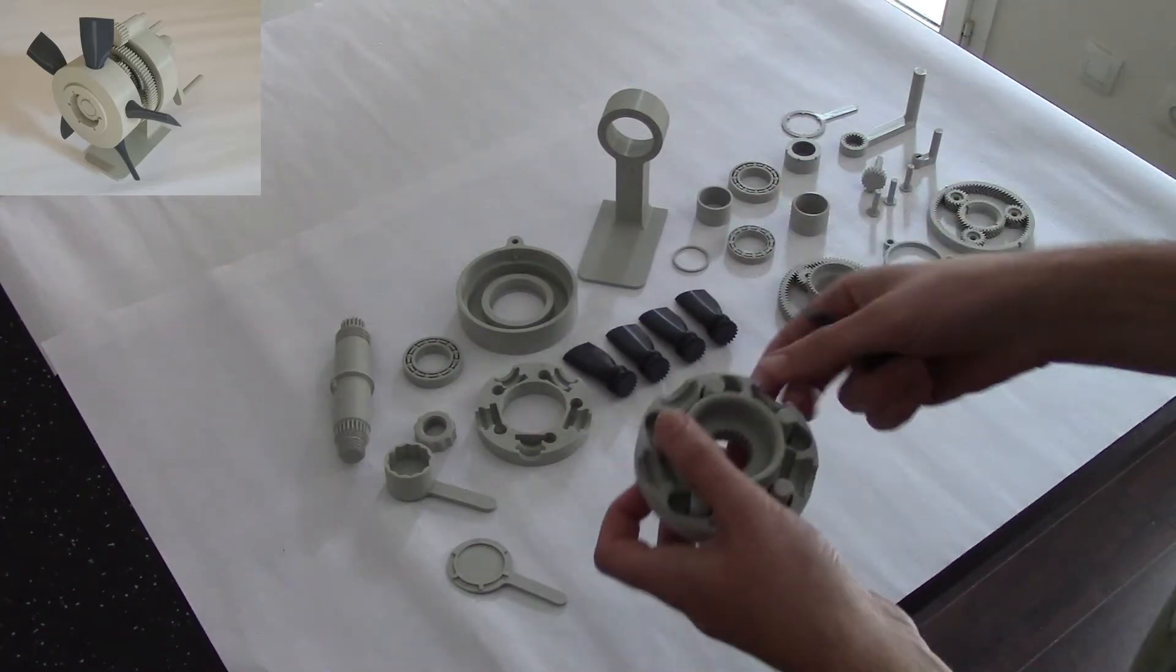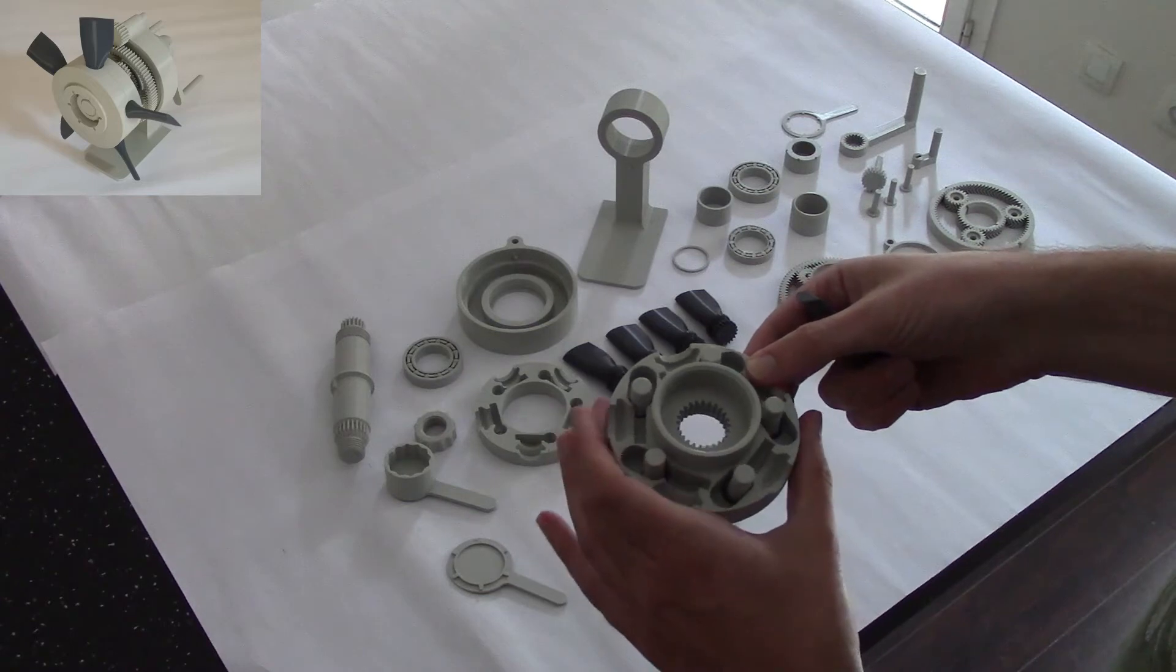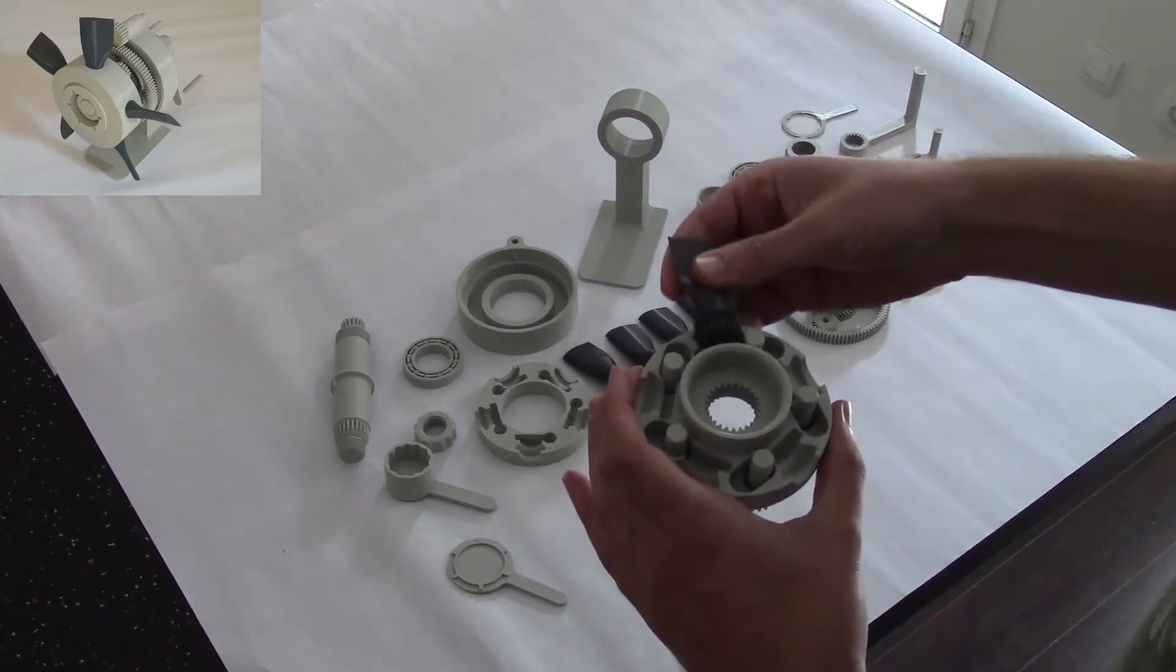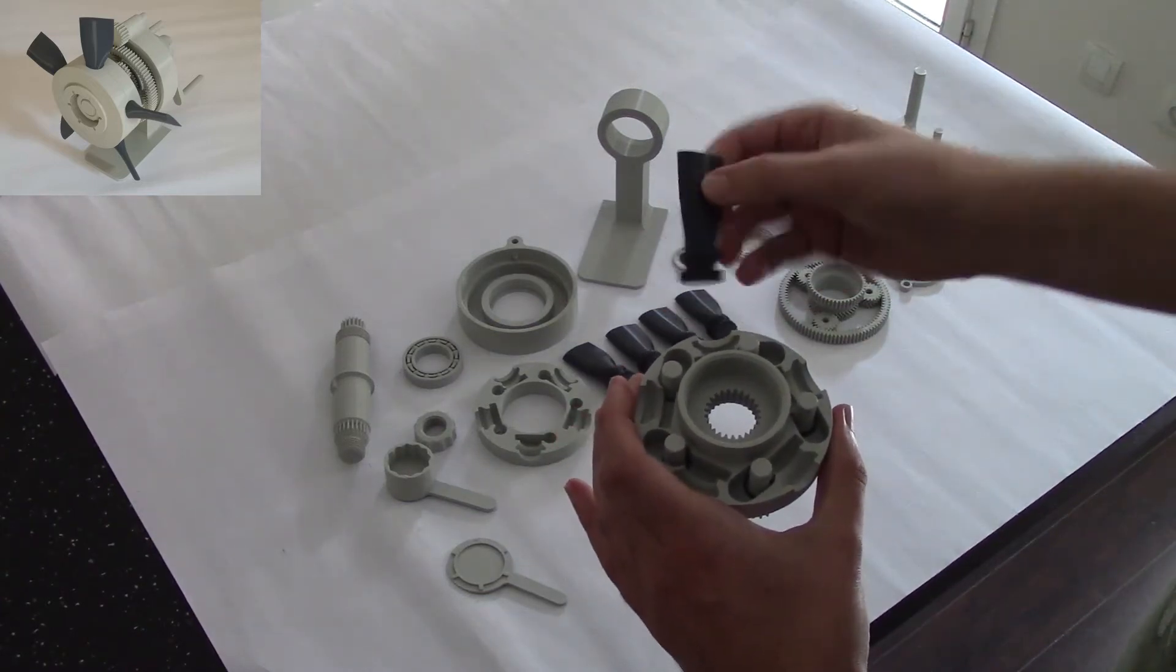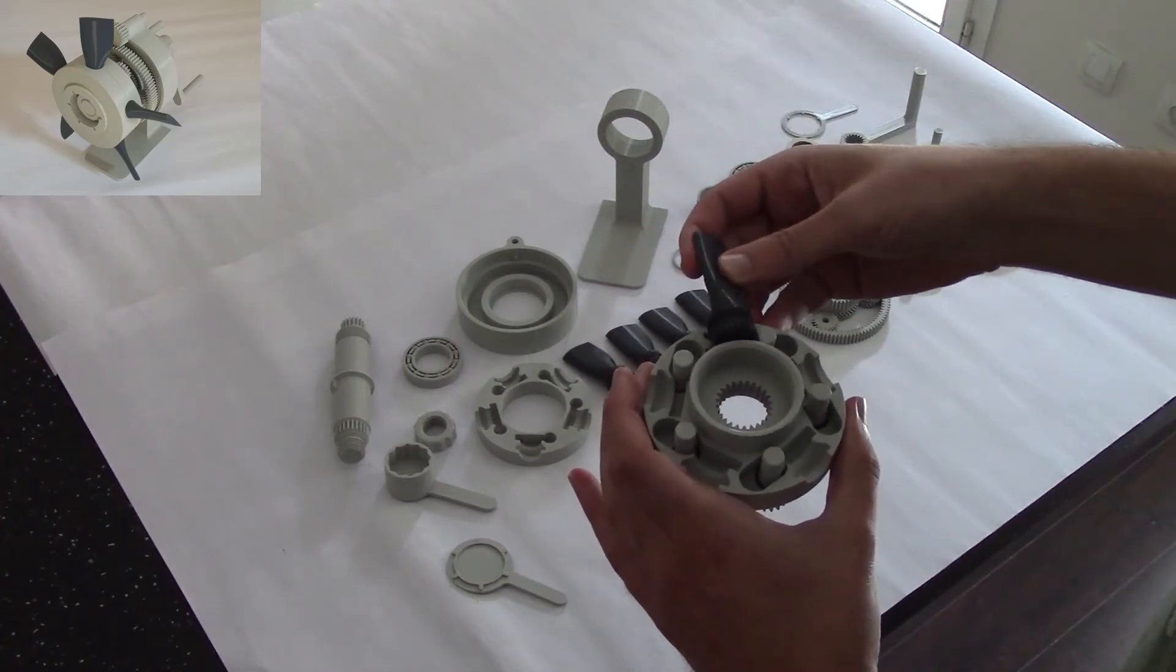When you have the five worm gears installed, you can go ahead and install the propeller blades. Try to put them all more or less in the same direction.